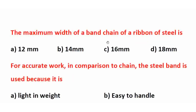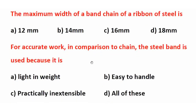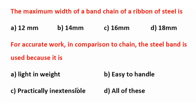Objective question: The maximum width of a band chain ribbon of steel is 16 mm — the right answer is option C. For accurate work in comparison to a chain, the steel band is used because it is practically inextensible, easy to handle, and highly accurate. The right answer for that question is also option C: practically inextensible.